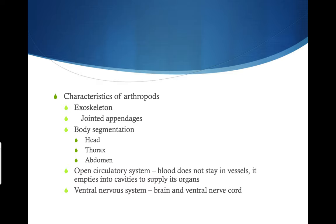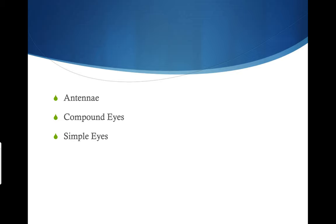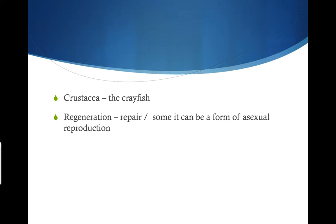You should know the three body segmentations and what is meant by exoskeleton. Some other features that arthropods have: some of them have antennae. Some of them have compound eyes, and others have simple eyes. Compound eyes are like a bee's — a bee has many, many eyes within its one eye.